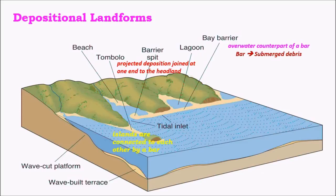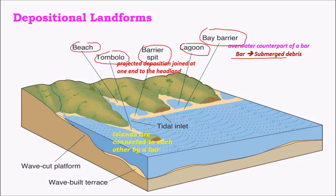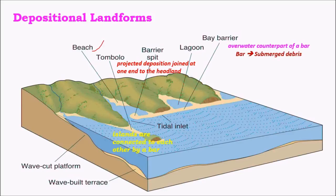Coming to depositional landforms, the major ones are: bar, bay barriers, lagoons or estuaries, barrier spit, tombolo, and beach. The most important of all is the beach, which is an accumulation of minute sediment left after wave action. Beaches are salient features and important tourist attractions. A tombolo is a region where a bar or marine debris is connected to a small island like a bridge.